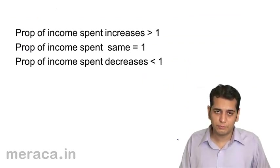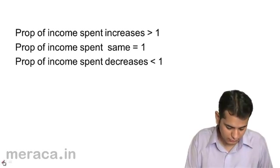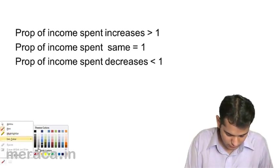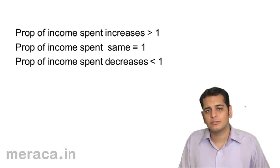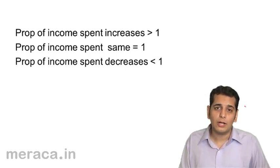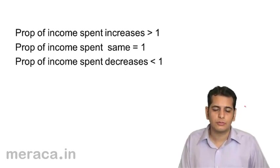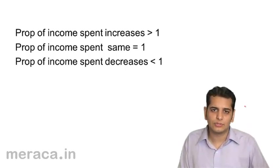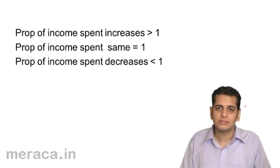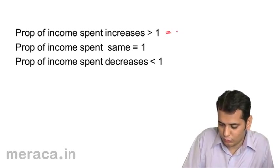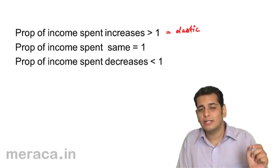Now let's look at the propositions. First, when the proportion of income spent increases — that is, income elasticity is more than one — this is similar to the total outlay method of price elasticity, where increasing total expenditure indicates elastic demand. So here we say that income elasticity is elastic, meaning demand is elastic with respect to income.